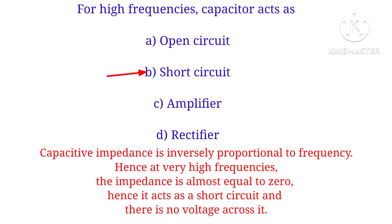For high frequencies, a capacitor acts as a short circuit. Capacitor impedance is inversely proportional to frequency. At high frequencies, impedance is almost equal to zero; hence it acts as a short circuit and there is no voltage across it.